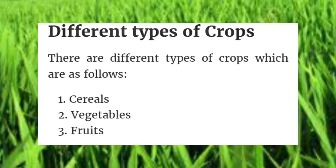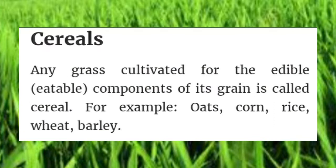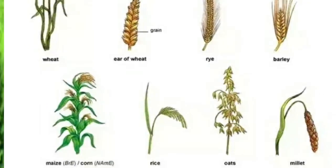There are different types of crops: cereals, vegetables, and fruits. Any grass cultivated for the edible components of its grain is called a cereal. For example, oats, corn, rice, wheat, barley, and so on.